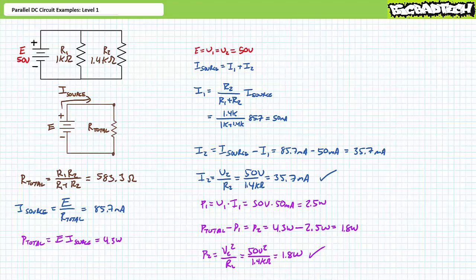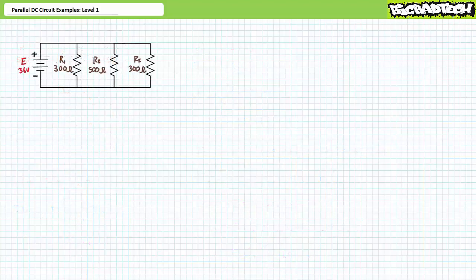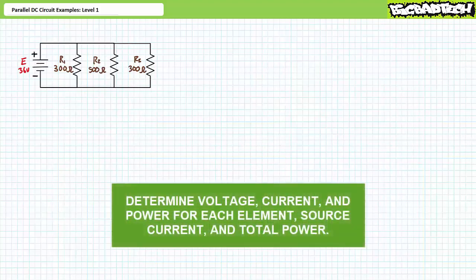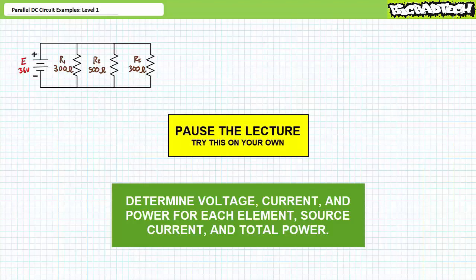Our next illustrated example features a 36-volt source in parallel with R1, a 300-ohm resistor, R2, a 500-ohm resistor, and R3, also a 300-ohm resistor. We're again being asked to solve for the voltage drop across each element, the current through each element, the power dissipated by each element, the source current, and the total power. By all means, pause the lecture and try this on your own. If you're tracking, you should have obtained the following results.